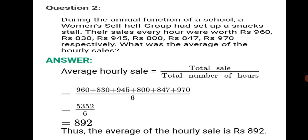Question two. During the annual function of a school, a women's self-help group had set up a snacks stall. Their sales every hour were worth rupees 960, 830, 945, 800, 847, 970 respectively. What was the average of the hourly sales? Per hour how much they earned is given to us. We write average hourly sale equals total sale upon number of hours.